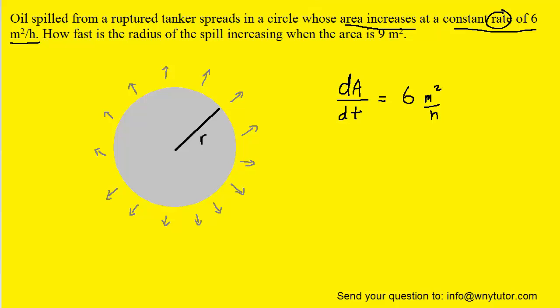Then we turn to the question which asks how fast is the radius of the spill increasing when the area is 9 meters squared. When the question asks how fast is the radius increasing, what it's really asking is for dr/dt. So we need to come up with an equation that has r in it and the most obvious choice would be the area of a circle. We know that the area of a circle is equal to pi times radius squared.